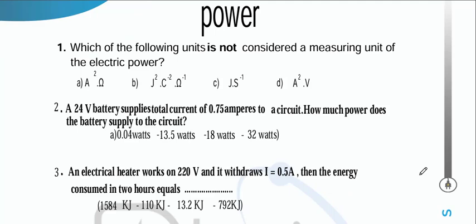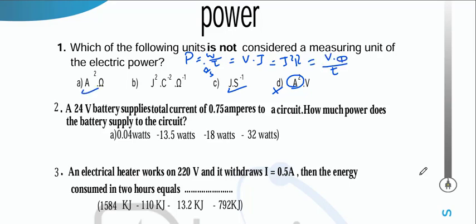Which unit is NOT a measuring unit of electric power? Power = W/t = J/s = J·s⁻¹. Or P = V·I (volt·ampere). Or P = I²R (A²·Ω). So ampere²·volt is not a valid unit of power.